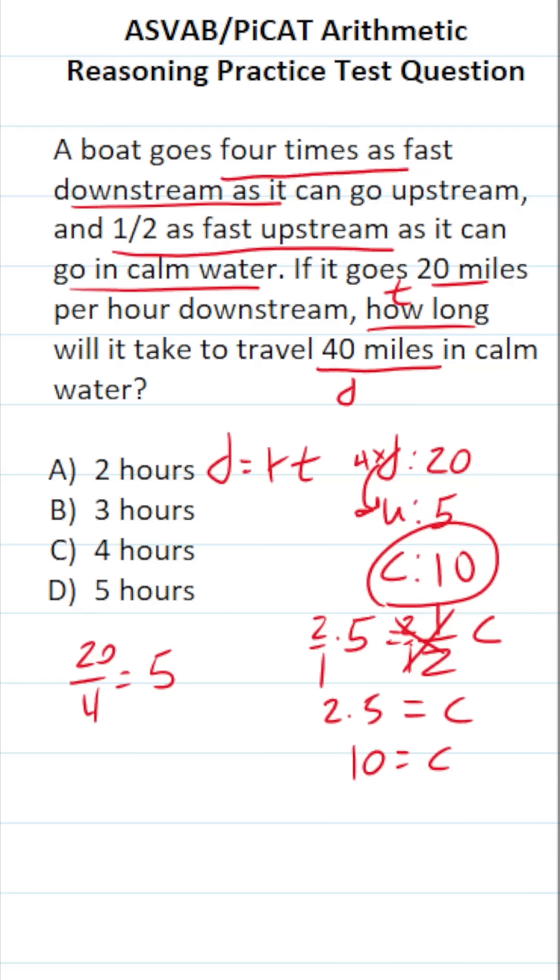Now that we know that, this one's actually very easy to solve. We know the boat is traveling a distance of 40 miles. We know its rate is 10 miles per hour in calm water. And we're going to be solving for T. To solve for T, divide both sides by 10. This crosses out, leaving you with T over here. Cross out these corresponding zeros. Four divided by one is four. It's going to take the boat four hours to travel 40 miles in calm water.